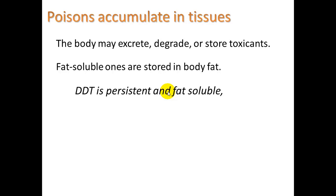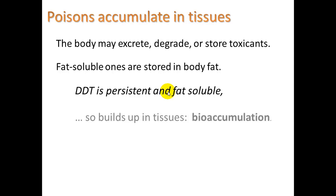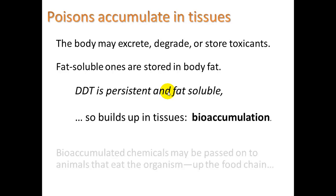DDT is persistent, meaning it stays in the environment for a long time. UV light, heat, and oxygen are not able to break it down very well — it doesn't oxidize quickly. It is also fat-soluble, so it builds up in tissues. We call that bioaccumulation.